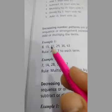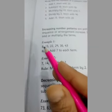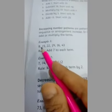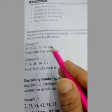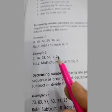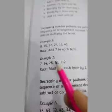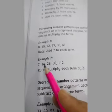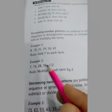Example 1: 8, 15, 22. Example 2: 7, 14, 28, 56. Let's see: 7 times 2 equals 14, 14 times 2 equals 28, 28 times 2... So we multiply each number by 2. This is an increasing number pattern.